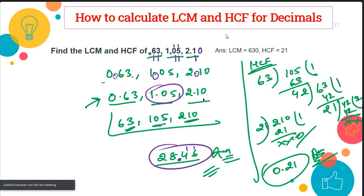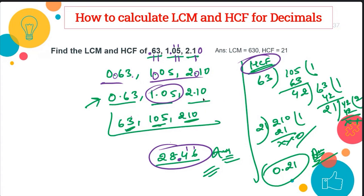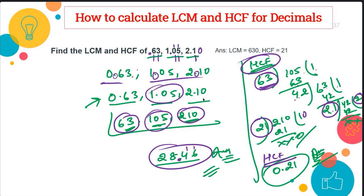To find the HCF of the same decimal numbers, use the same arrangement. With 63, 105, and 210: divide 105 by 63 to get remainder 42; divide 63 by 42 to get remainder 21; divide 42 by 21 to get remainder 0. Then 21 divides 210 exactly 10 times. The HCF is 21, and placing the decimal after two digits gives the final answer of 0.21.